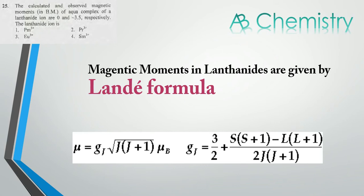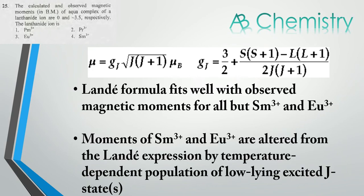Here, this equation, the Landé equation, is followed by most of the lanthanide ions except for Samarium and Europium. It is because of the temperature-dependent population of low-lying excited J-states of Samarium and Europium 3+.